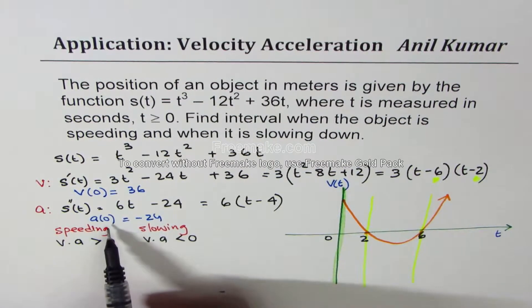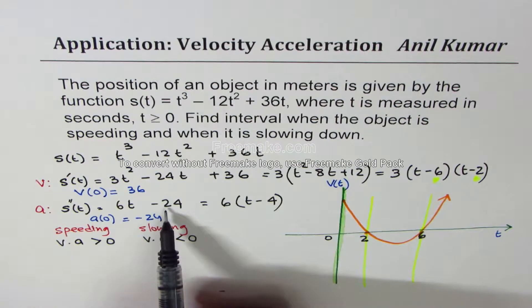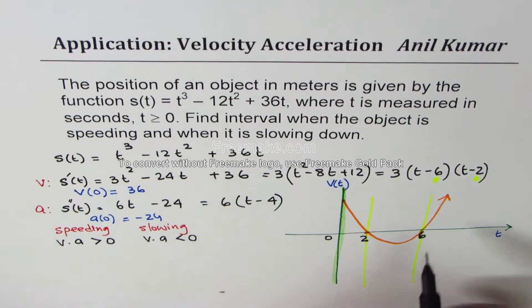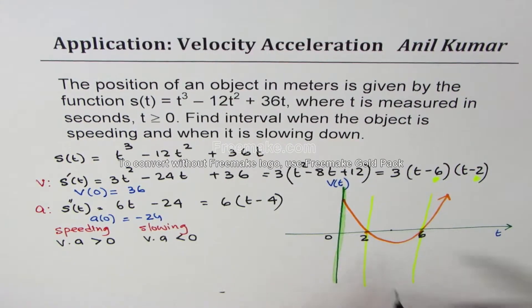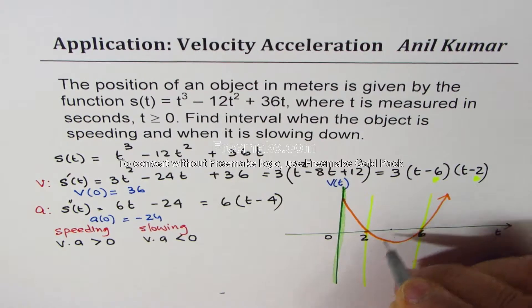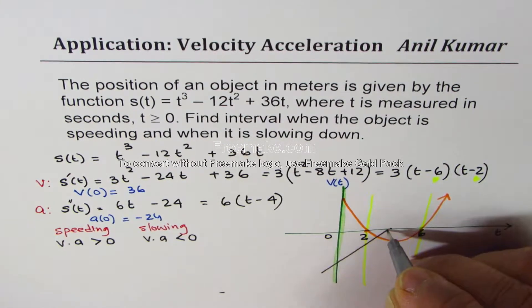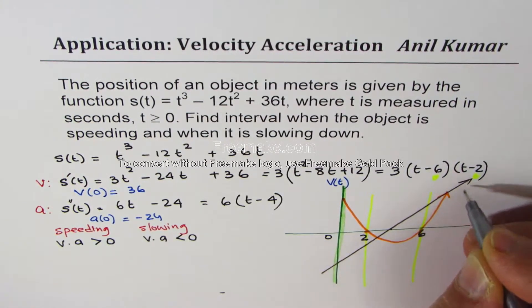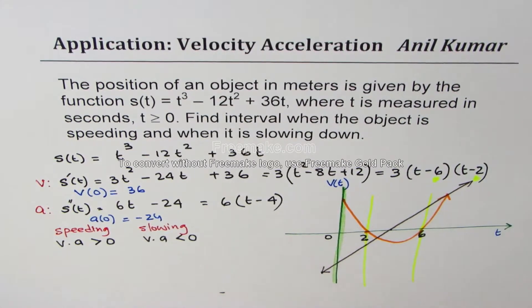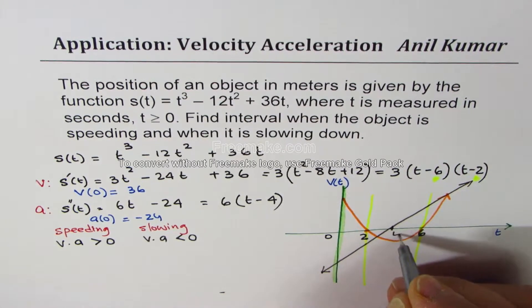As far as acceleration is concerned, it's a straight line with y-intercept of minus 24 and x-intercept of 4. So 4 happens to be right in the middle. So now we can sketch the acceleration on the same graph. Let's say this is 4 for us. So we'll draw a line going through 4. Something like this. So this point for us is 4.